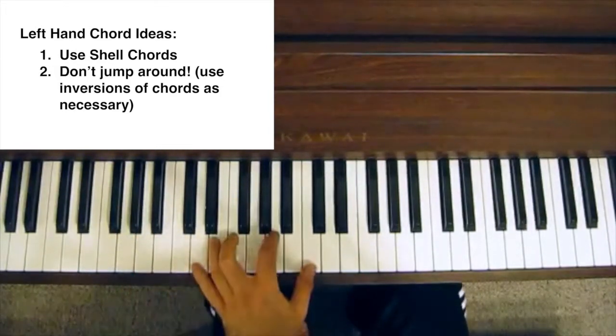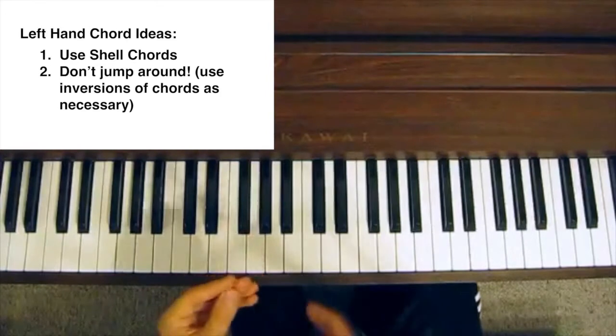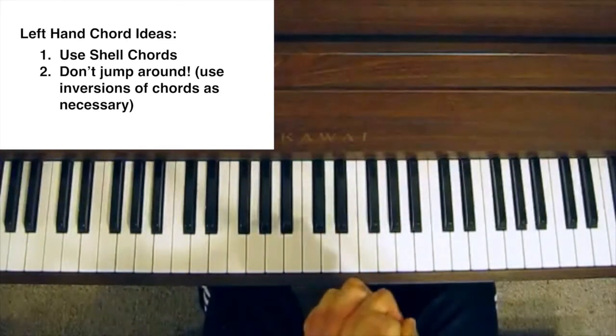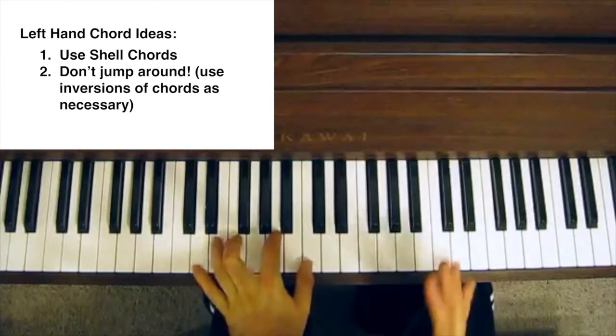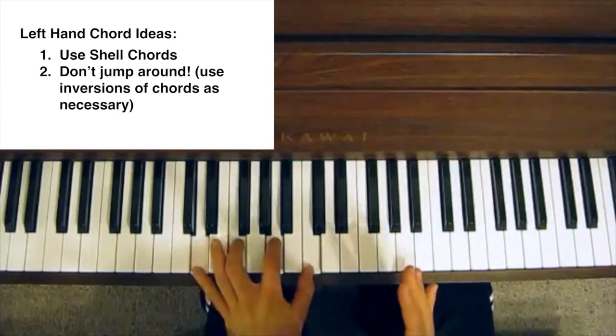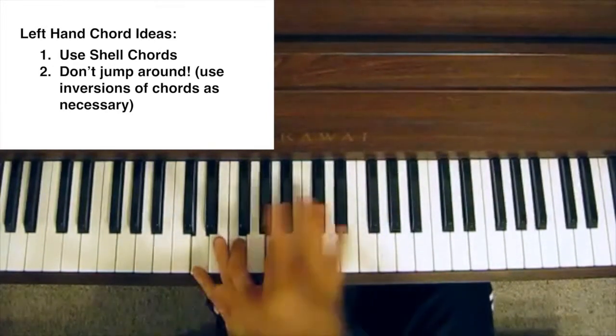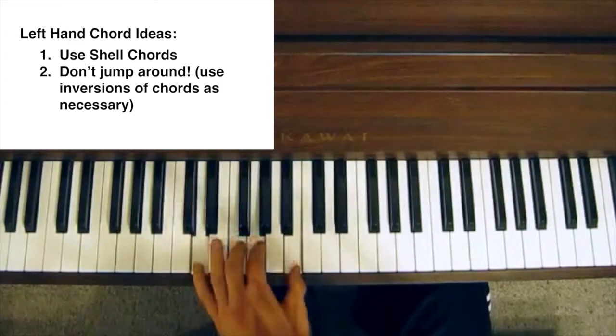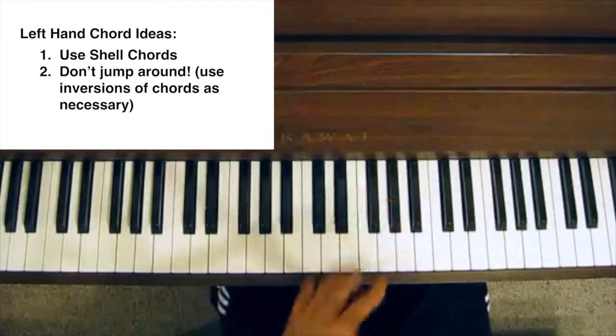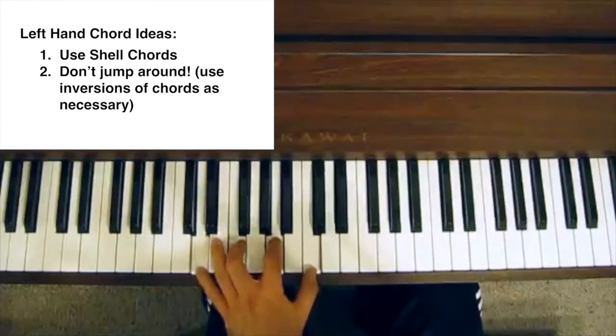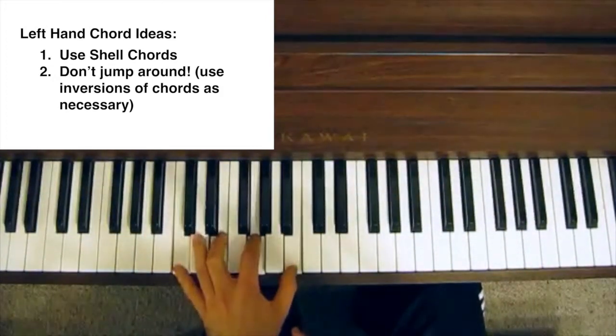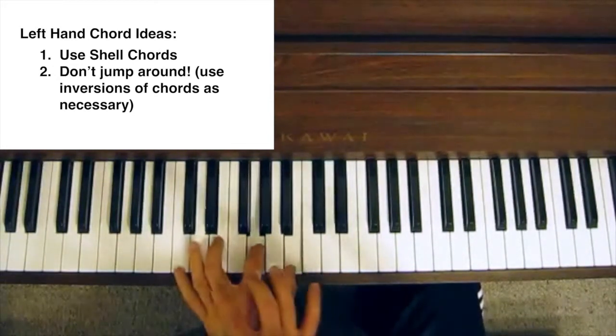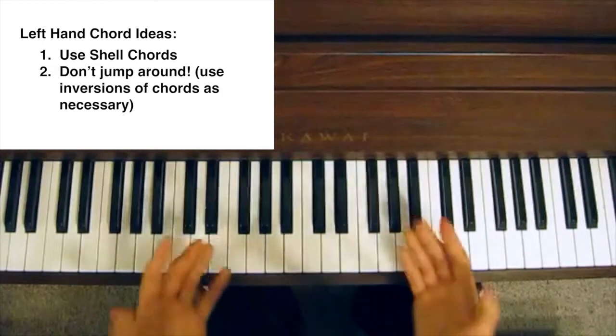And the reason we're doing that is because the human ear likes to hear sounds that are close to one another. So, you don't want to move around too much if you can avoid it. So, the easiest way to get to G7 from this position is just by changing these 2 notes. These ones stay exactly the same. You're not jumping around the keys, you're not changing octaves. You're literally just changing 2 notes at a time.